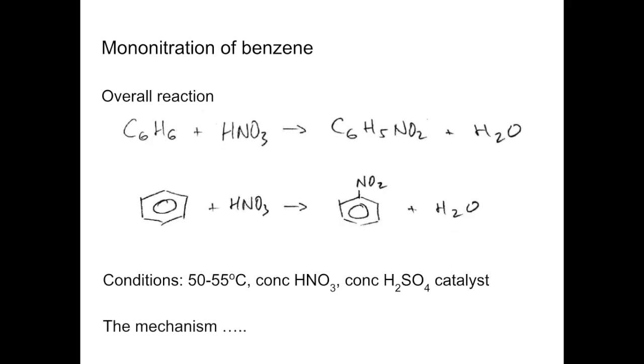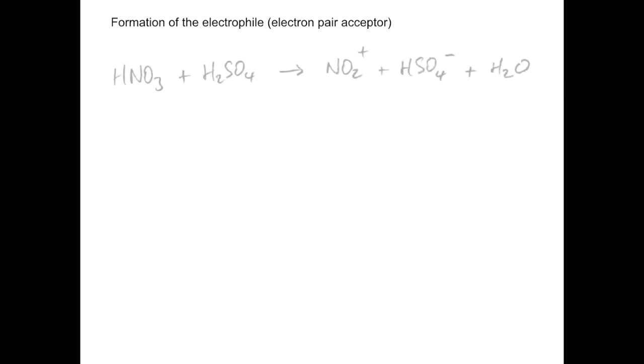So we'll look at the mechanism now. The first part of the mechanism is the formation of the electrophile. Remember, this is electrophilic substitution — the electrophile is an electron pair acceptor. So the first thing that happens is the two concentrated acids combine and form the important nitronium ion, and that's our electrophile.